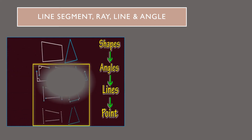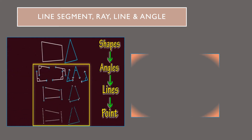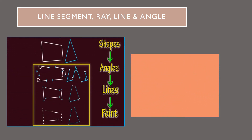Let us recall line segments, ray, line, and angle. A line segment has two end points, and a ray has only one end point.